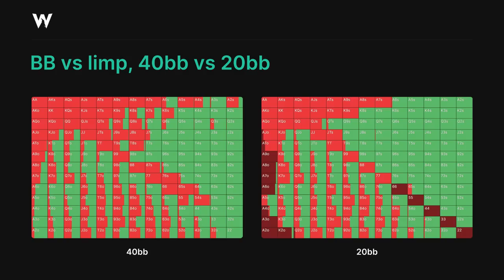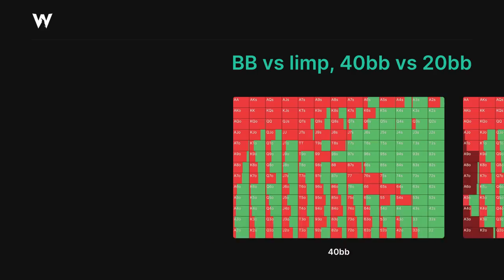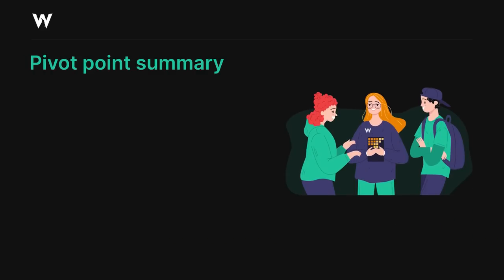The strongest suited hands which are in a close spot if they get jammed on — like ace-6 suited, king-8 suited, and queen-10 suited — are heavily preferring to just check back instead of raising and being indifferent versus a jam. This node is a little simpler to summarize than the previous one.